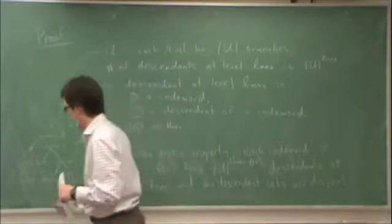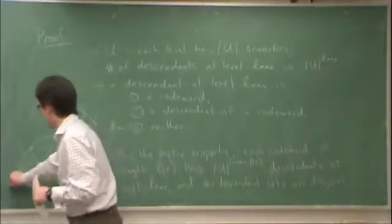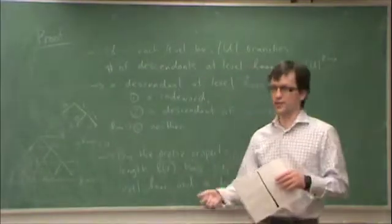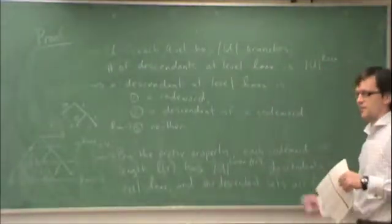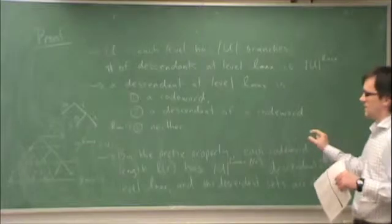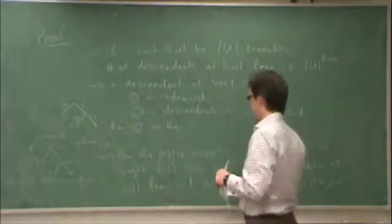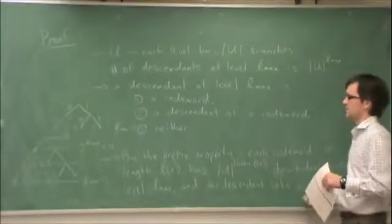And what's more, if I have any descendant down here, it must have descended from exactly one codeword because, again, codewords do not descend from each other. So therefore, once I have a leaf that terminates this graph, all of its descendants are removed. So therefore, these descendant sets are disjoint.